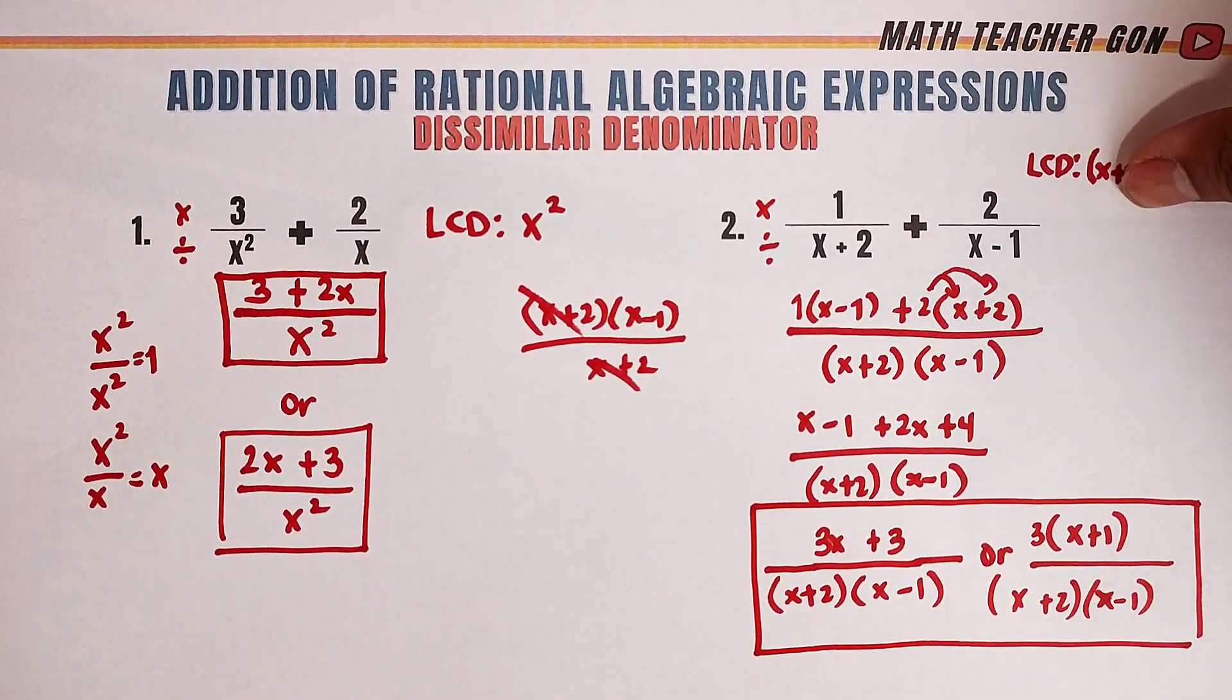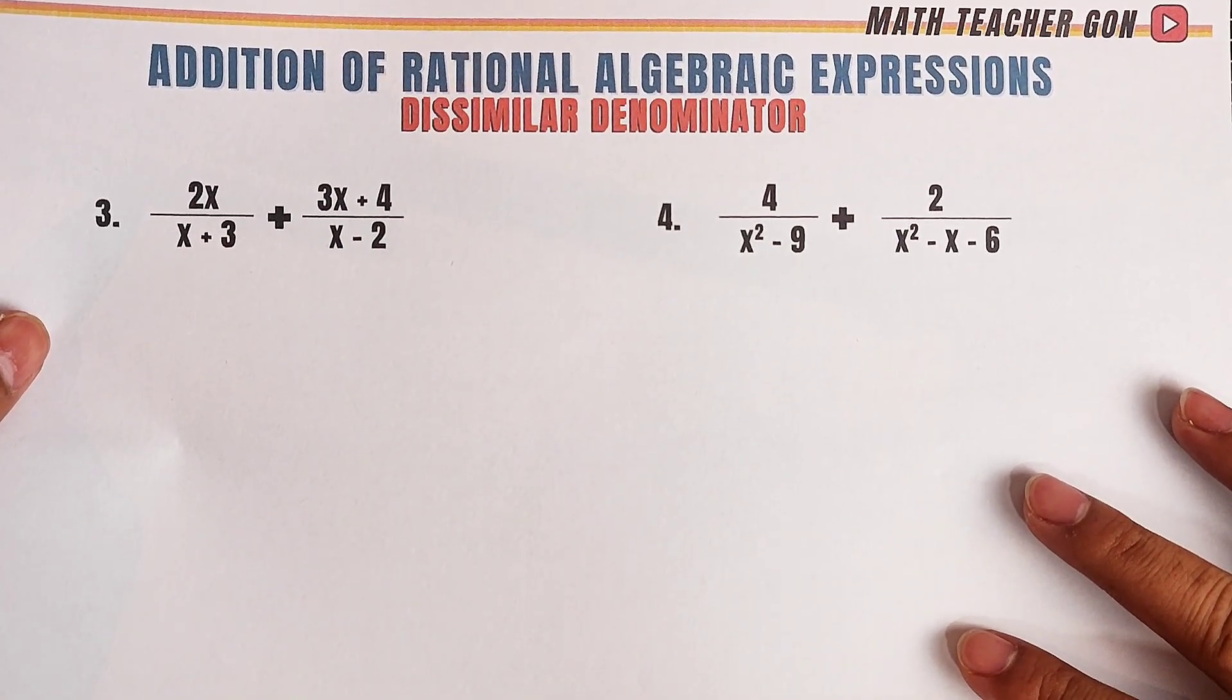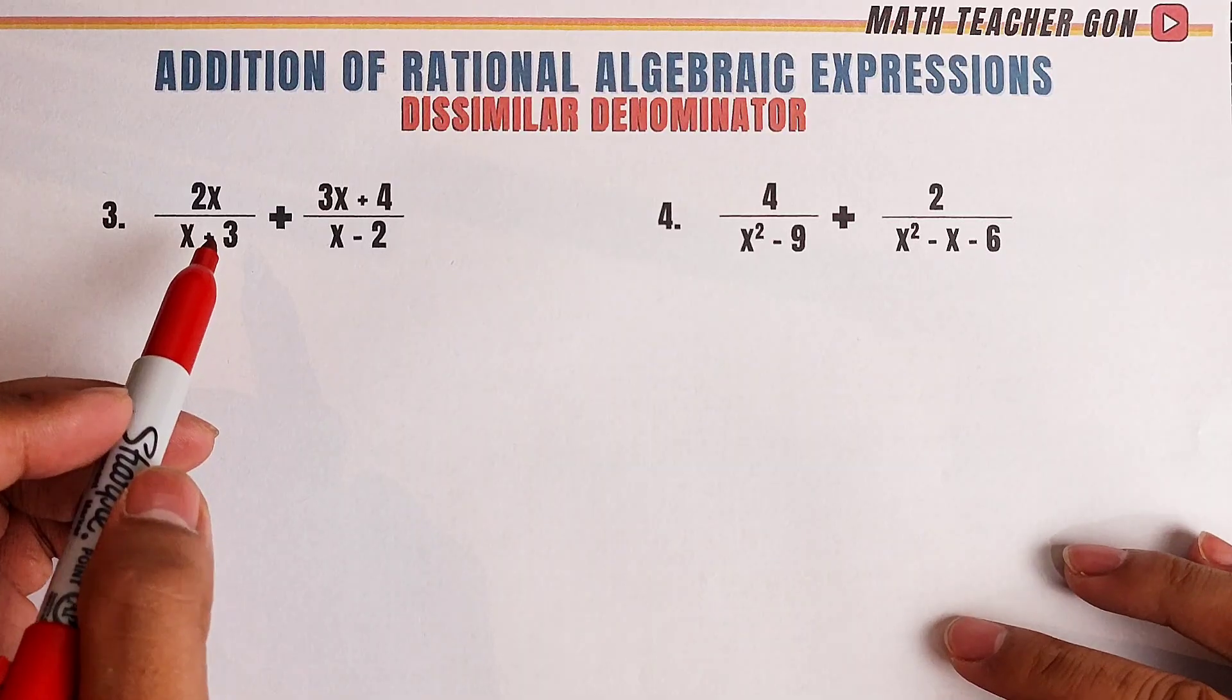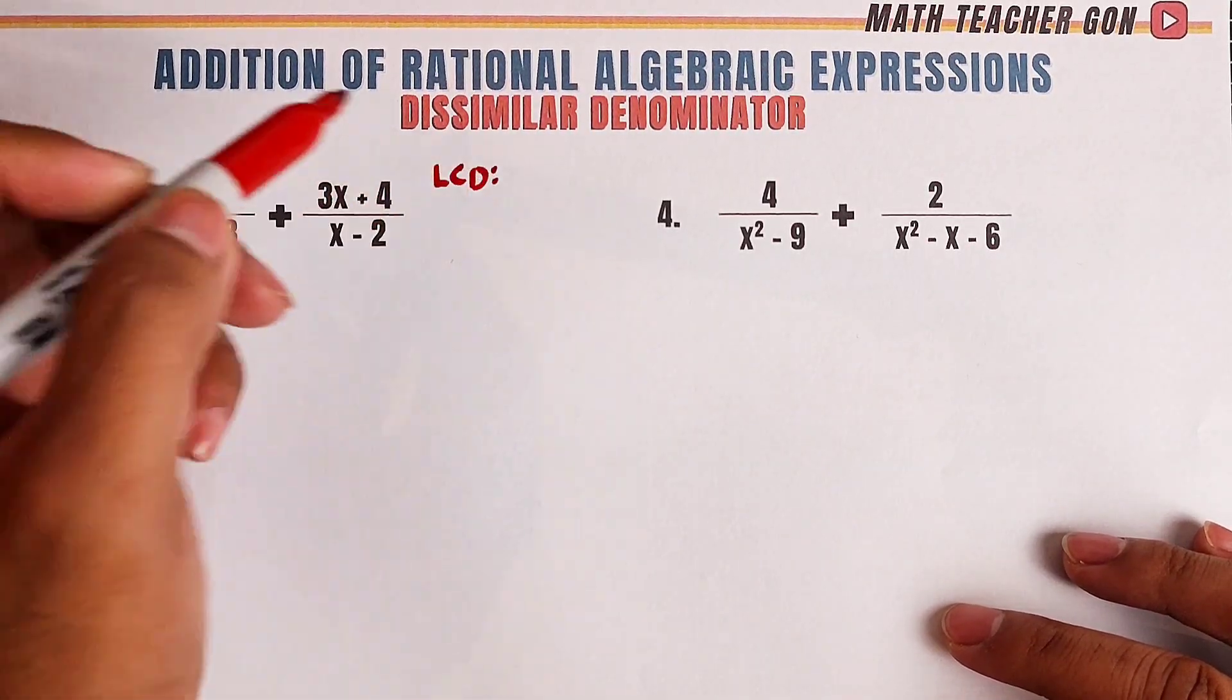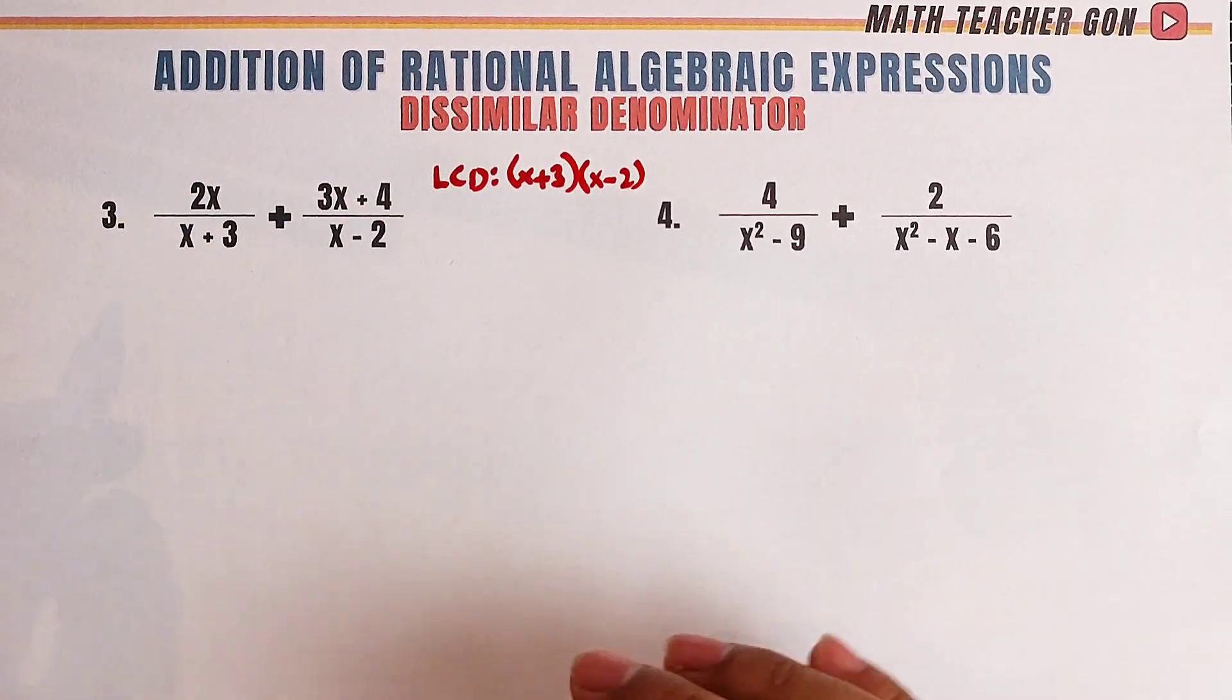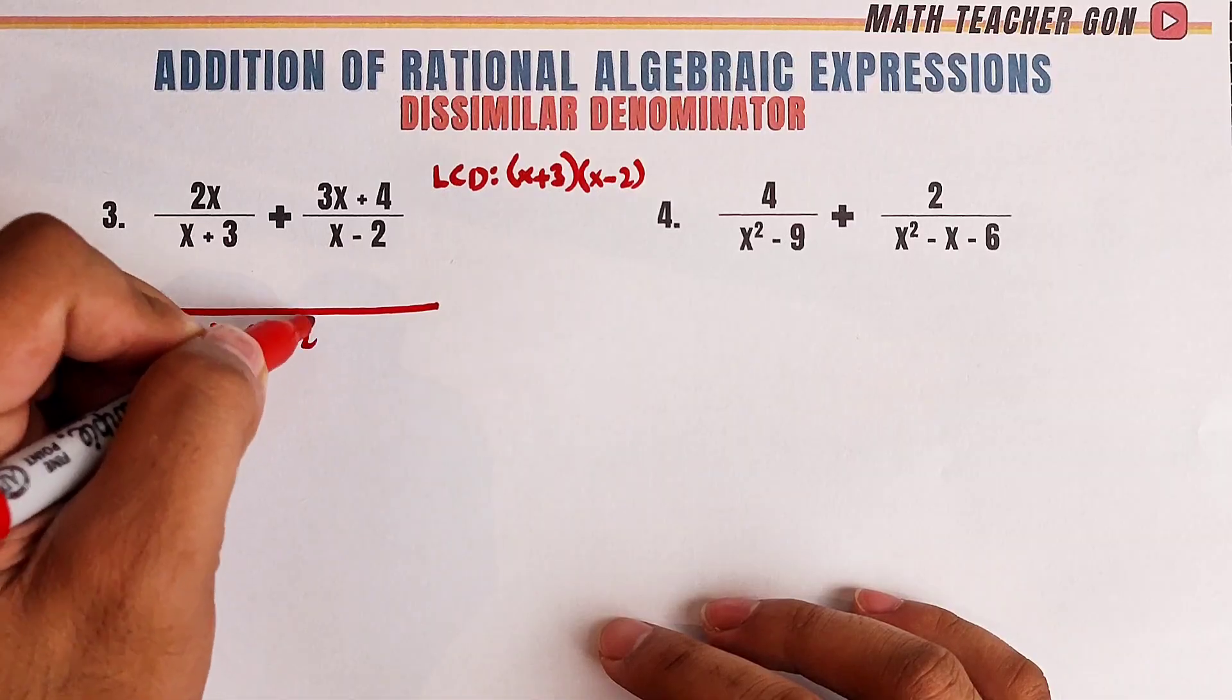Now, let's move on with item number 3. For number 3, same process guys. As you can see, two binomials that are different. So, what will be our LCD here? The LCD is x plus 3 times x minus 2. Same process. x plus 3 times x minus 2.